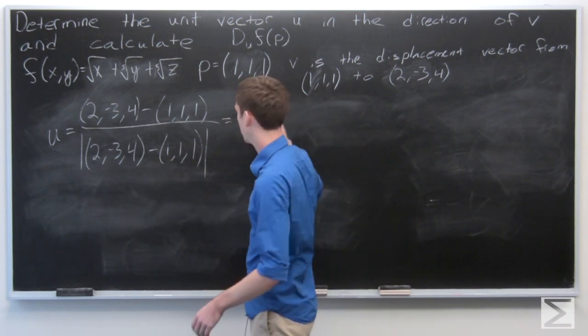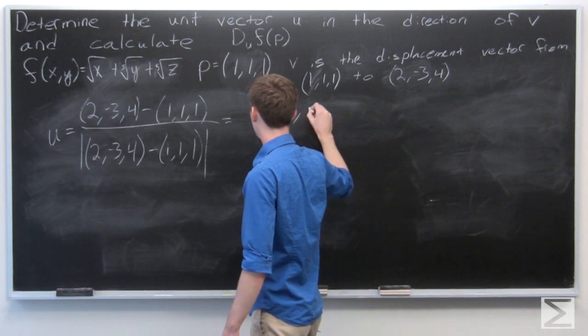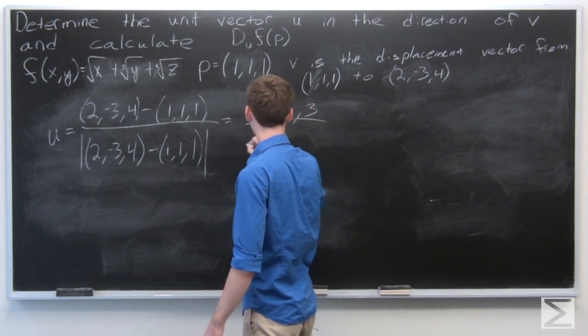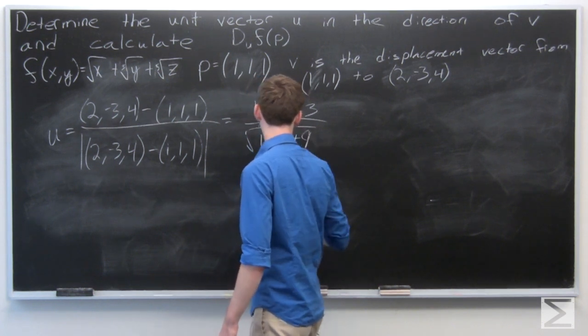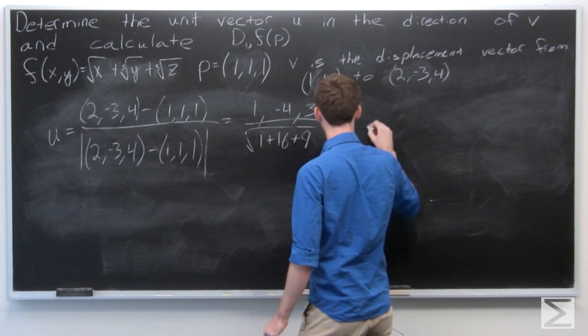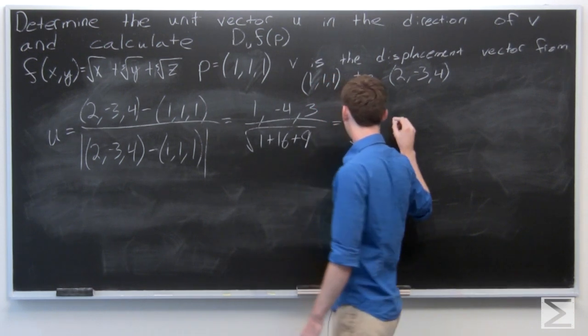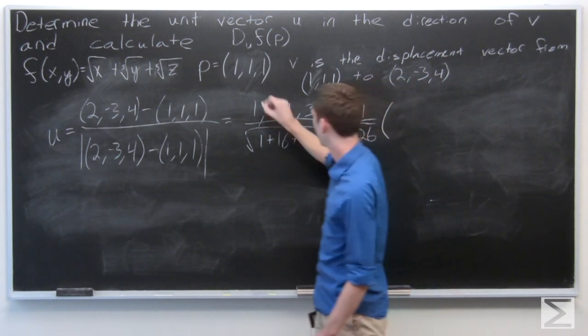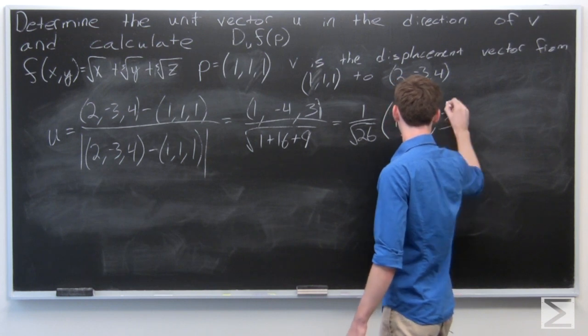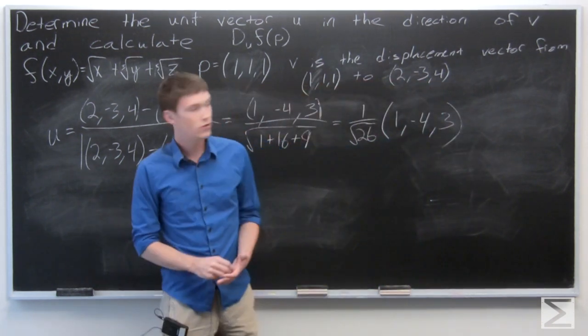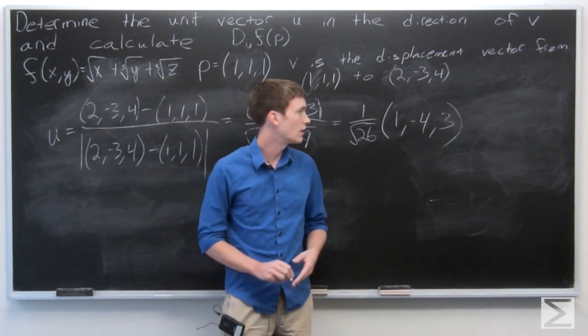And we can calculate this, and we find that u is equal to 1 over the square root of 26 times the vector (1,-4,3).